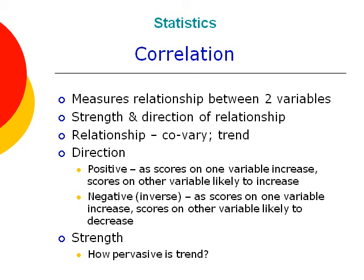Notice I use the word trend. A trend means that not every pair of scores in a set of scores will conform to the pattern, but just that a general trend exists. If there is no trend, there is no correlation, or no relationship between variables or the set of scores.